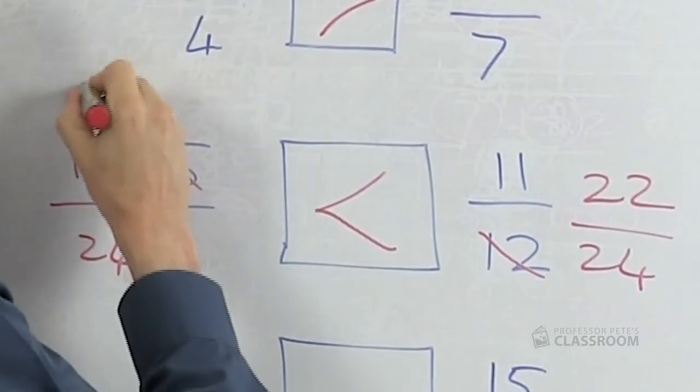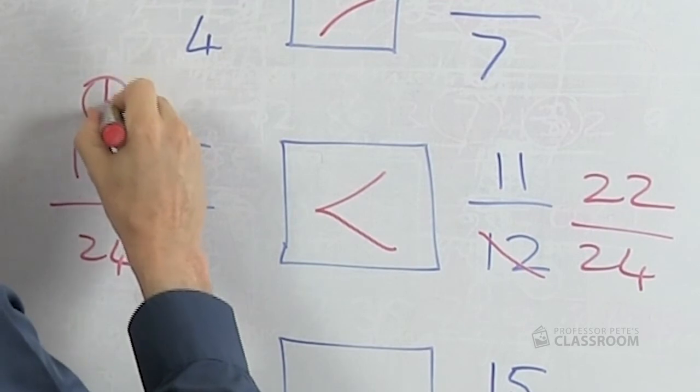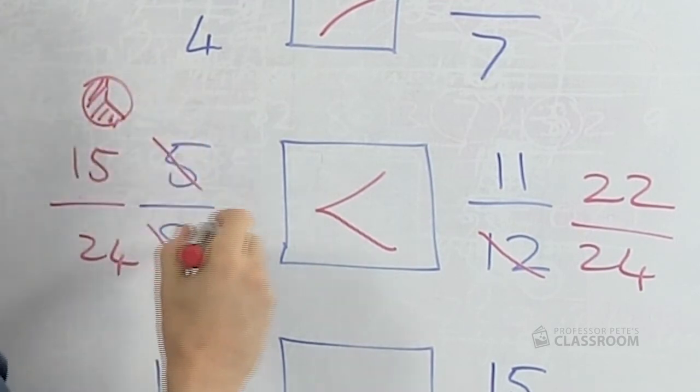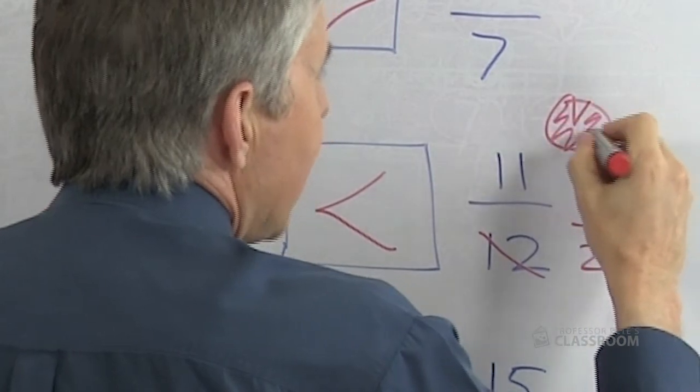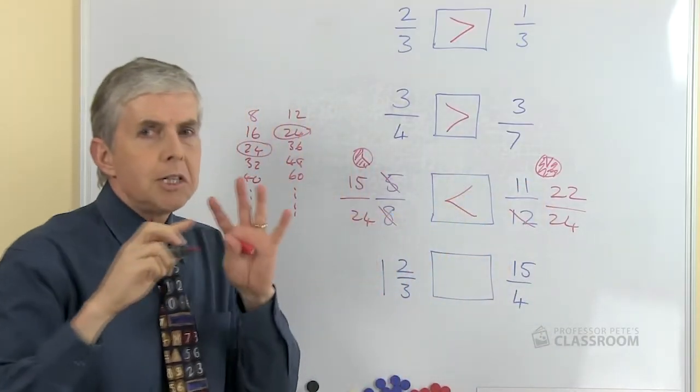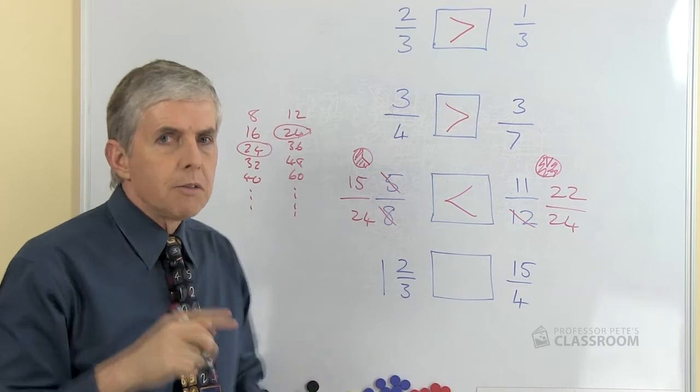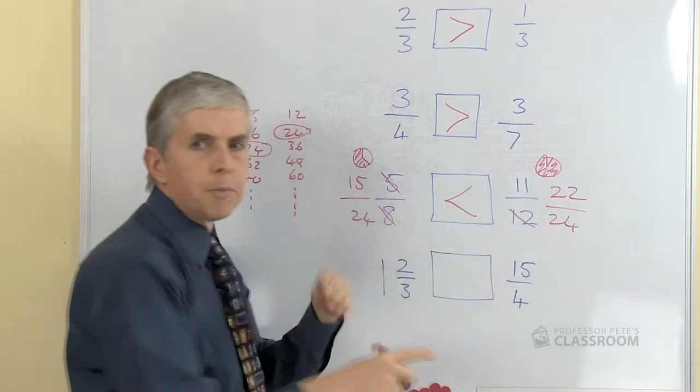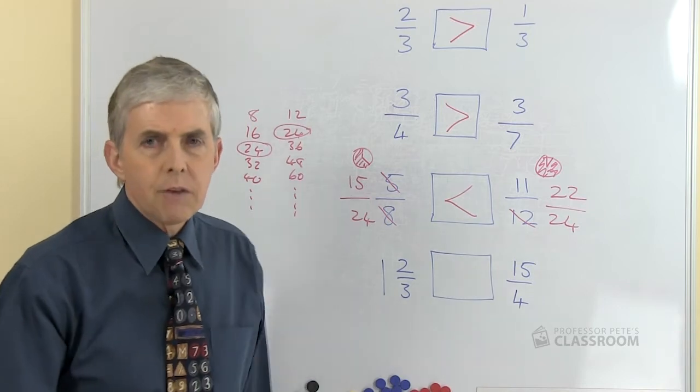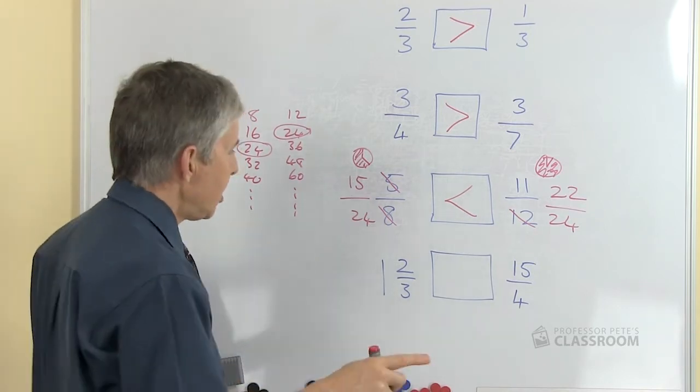You could picture this in your mind and think okay three-eighths is about that much, there's my five-eighths, eleven-twelfths is going to look something like that. So almost intuitively or visualizing the fractions in your head you could have worked that one out without actually converting the fractions. You'd have to find out if that was permitted by your teacher.